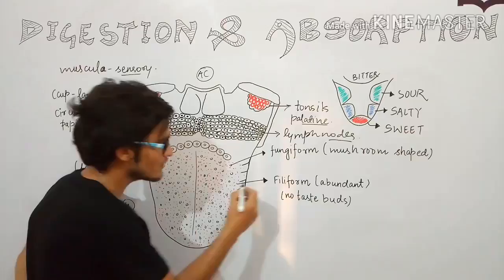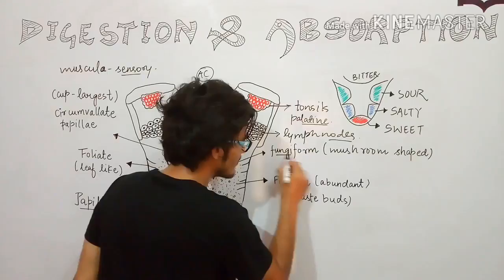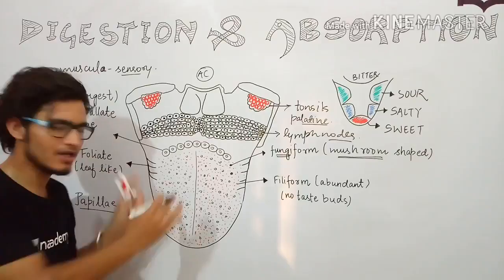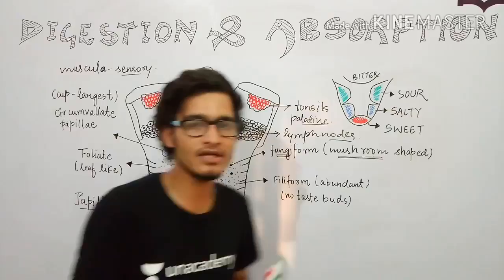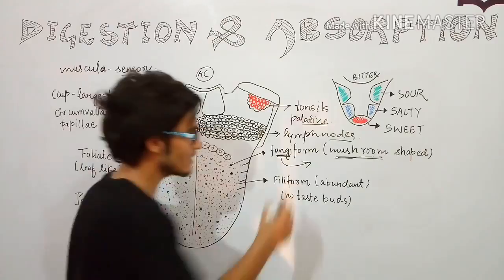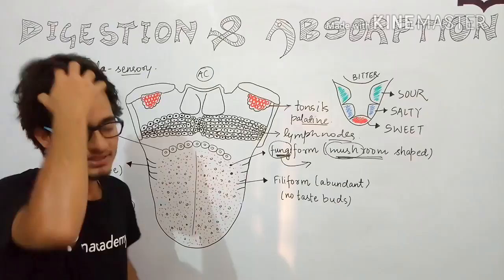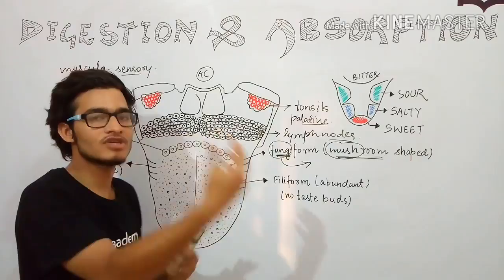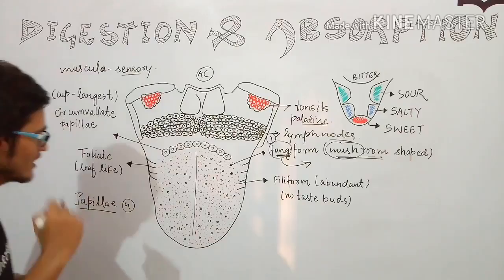The first type is fungiform papillae, which is of mediocre size and mushroom shaped. These are well abundant in the tongue, though they are not the most abundant type. Fungiform simply means mushroom shaped — mushroom is an example of fungi, so fungi form means mushroom shaped. Fungiform papillae do have taste buds.